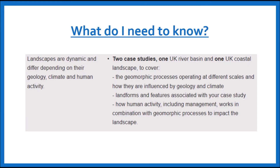Okay, so just to go over what we've already done. We've looked at the geomorphic processes in the area and how they've been influenced by geology and climate — so we talked about the glacial deposits, the till, the chalk, and the climate including freeze-thaw weathering occurring in the area. We've also talked about the landforms and features associated with your case study — more specifically Blakeney Point Spit through longshore drift, Cromer Ridge and the cliffs. And we're now going to move on to talking about how human activity including management has impacted the landscape.